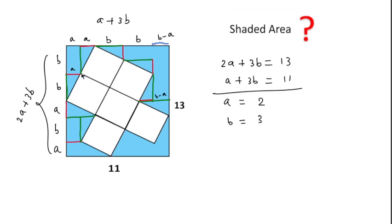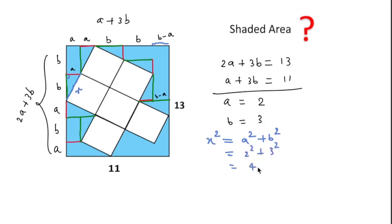Now, if we consider the side length of the square as 'x', then by Pythagoras' theorem, since this is a right-angle triangle, we can write x squared equals a squared plus b squared. And a squared means 2 squared and b squared means 3 squared, that is 4 plus 9 which equals 13. And x squared is actually the area for this square, so the area of each square is 13.